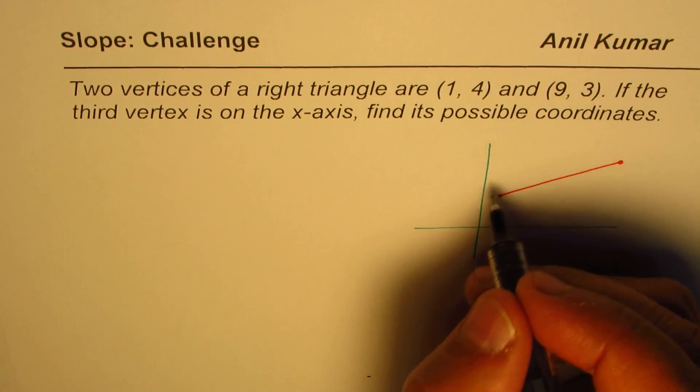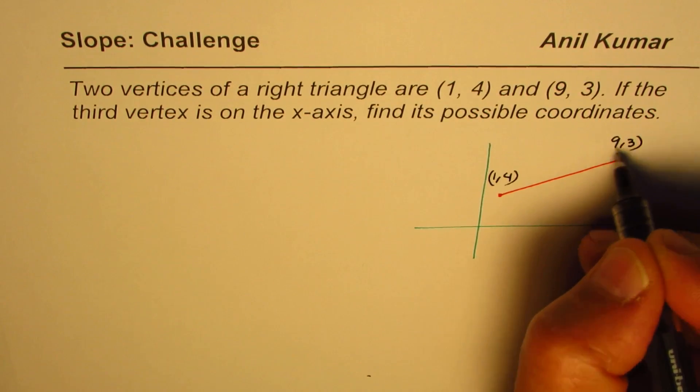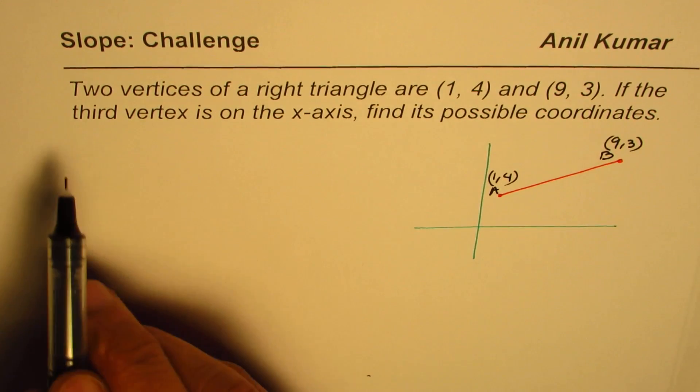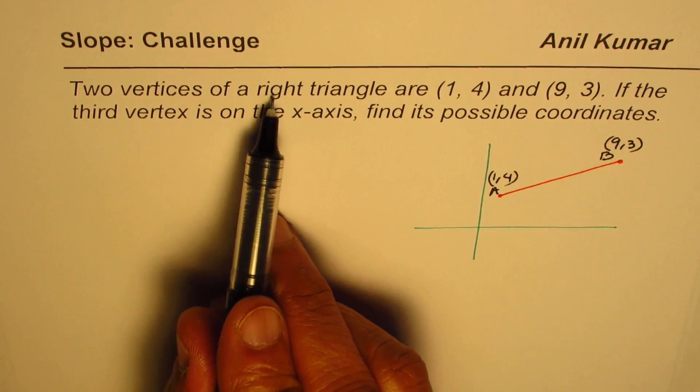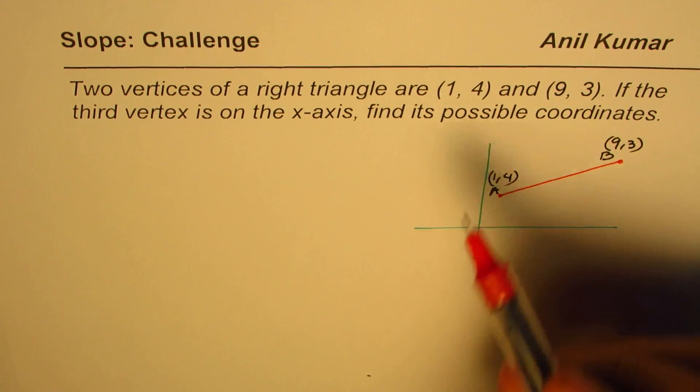So we have points (1, 4) and (9, 3). Let me call them as A and B. Now the third vertex is on the x-axis and we also have a right triangle.